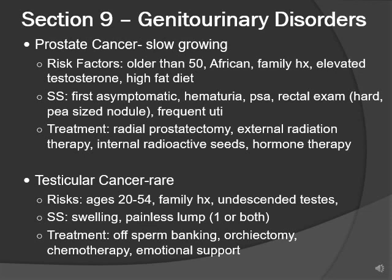Testicular cancer is rare and usually occurs between ages 20 and 54. Risk factors include being in that age group, family history, and undescended testes. Signs and symptoms: swelling and a painless lump on one or both testes. Treatment includes sperm banking, orchiectomy — surgical removal of one or both testes — and chemotherapy. Emotional support is important because of implications for fertility.